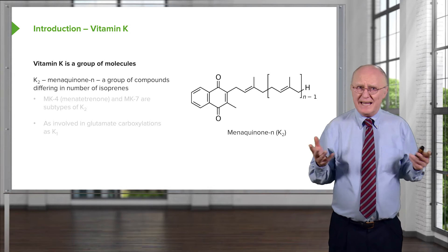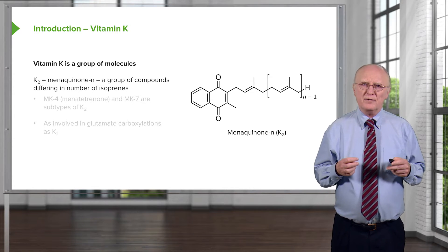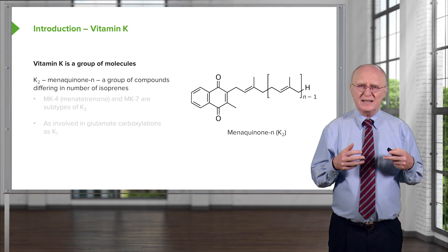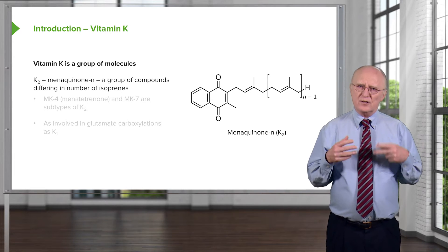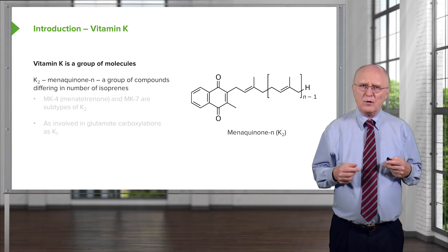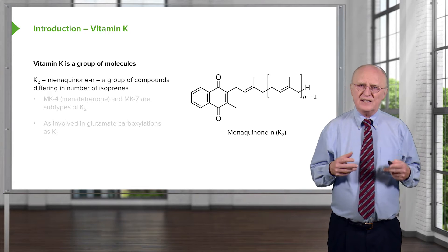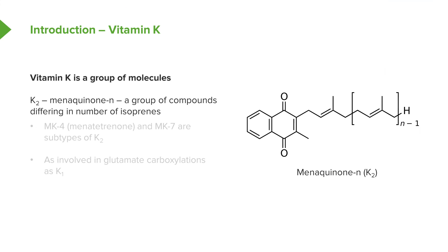Vitamin K is a group of molecules. Vitamin K2 is known as menaquinone, and it's a group of compounds that differ in the number of isoprene units they have. An isoprene unit contains five carbons and the rest being hydrogens, and it's the way the molecule is built — so molecules vary in size according to how many isoprene units they contain. MK4, also known as menatetranone, and MK7 are subtypes of vitamin K2. They are also involved in glutamate carboxylations, at the same level as vitamin K1.